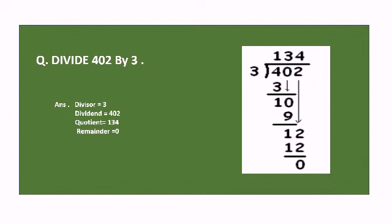Now divide 402 by 3. Here 3 is the divisor and 402 is the dividend. First, divide 4 by 3: there is one 3 in 4, so 3 ones are 3. Subtract: 4 minus 3 equals 1. Bring down 0 to get 10.